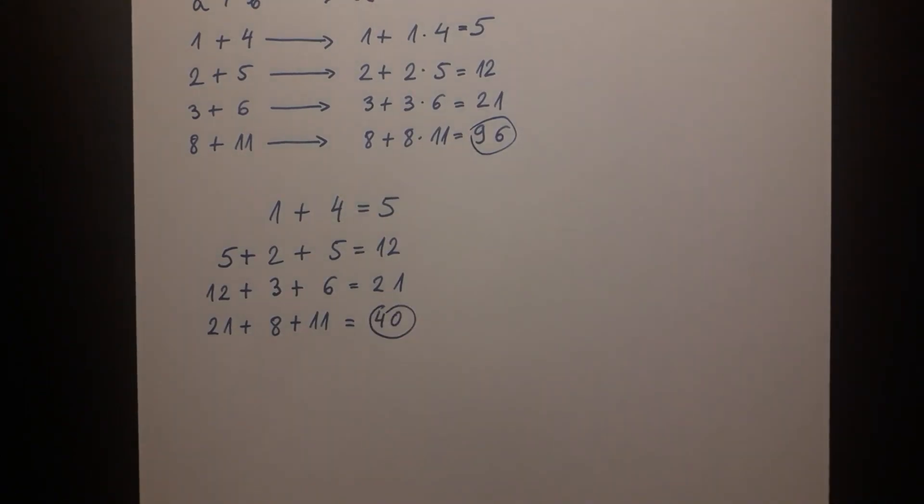There is a way to reconcile both of these two approaches and we can see that the answer of 96 can be justified under the running total method.